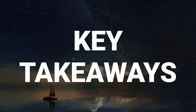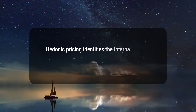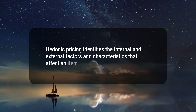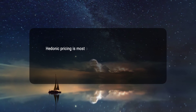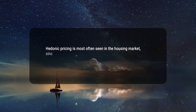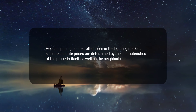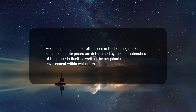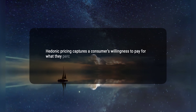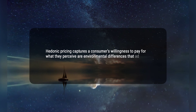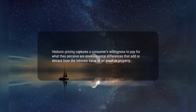Here are three key takeaways. 1. Hedonic pricing identifies the internal and external factors and characteristics that affect an item's price in the market. 2. Hedonic pricing is most often seen in the housing market, since real estate prices are determined by the characteristics of the property itself as well as the neighborhood or environment within which it exists. 3. Hedonic pricing captures a consumer's willingness to pay for what they perceive are environmental differences that add or detract from the intrinsic value of an asset or property. Hope this would help.